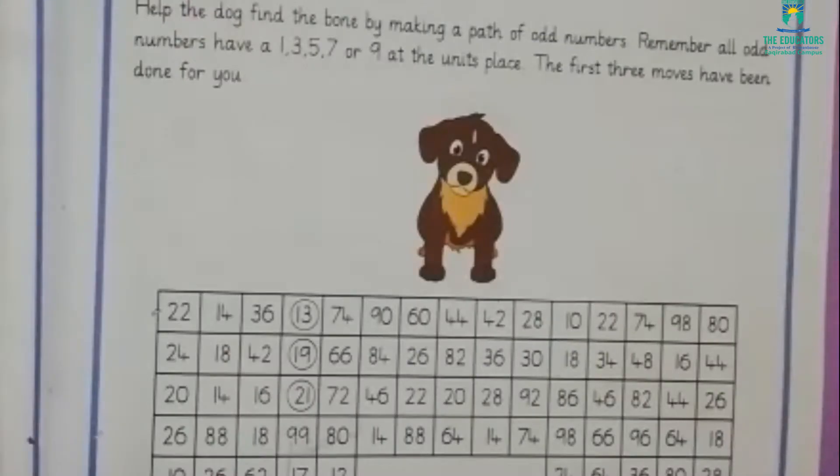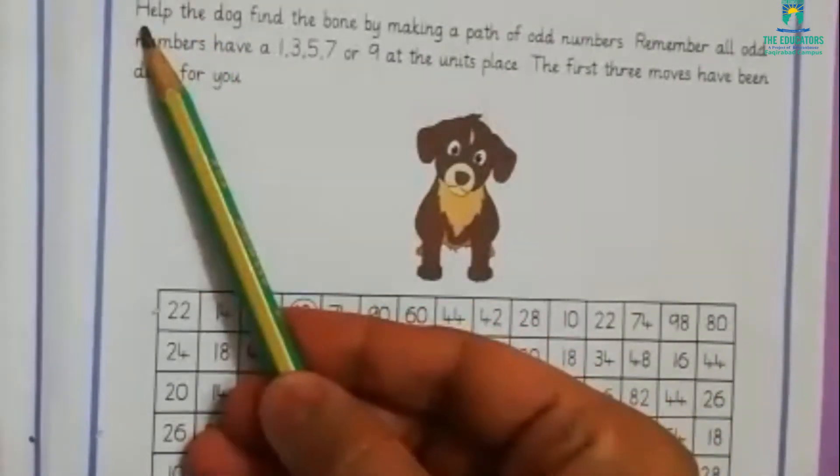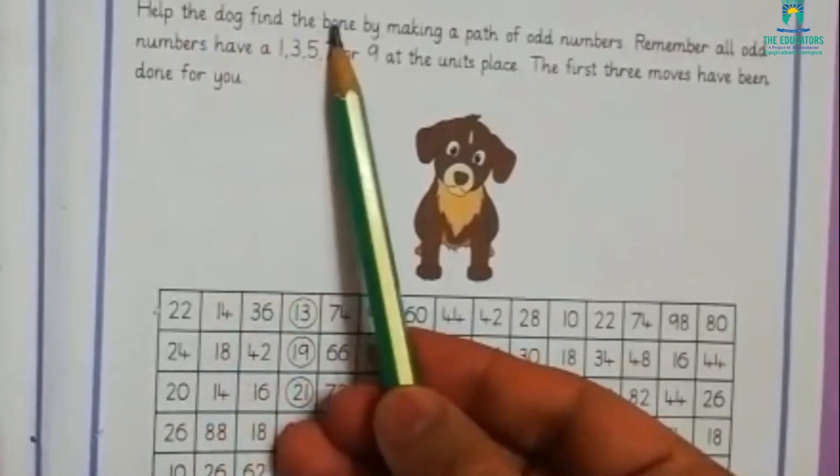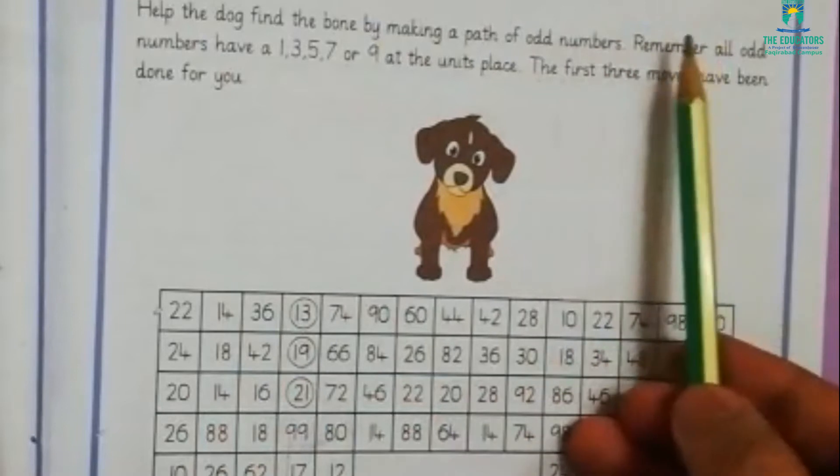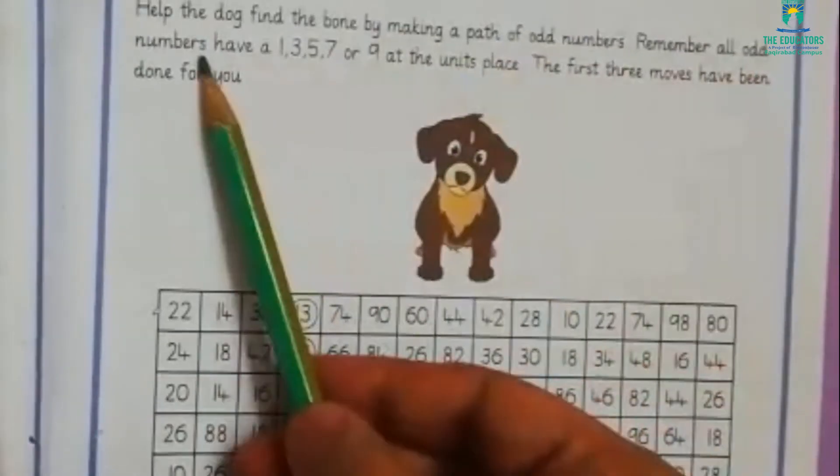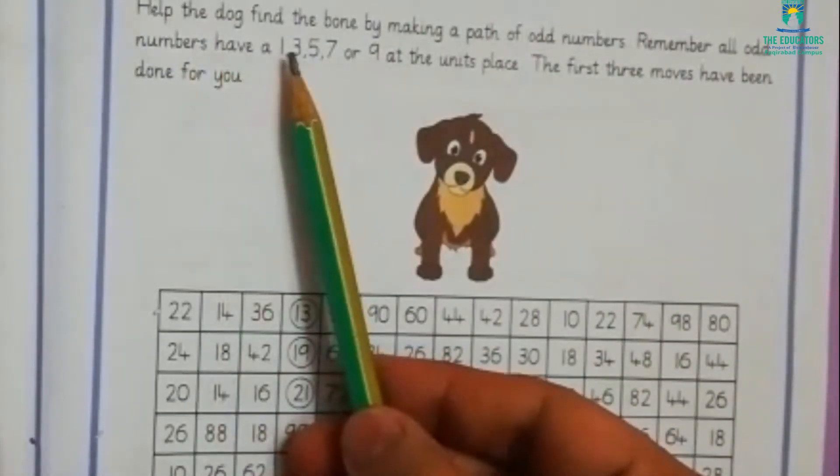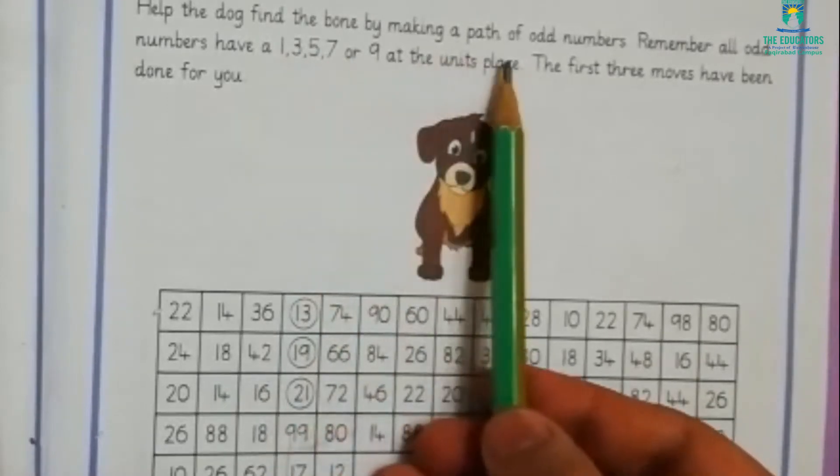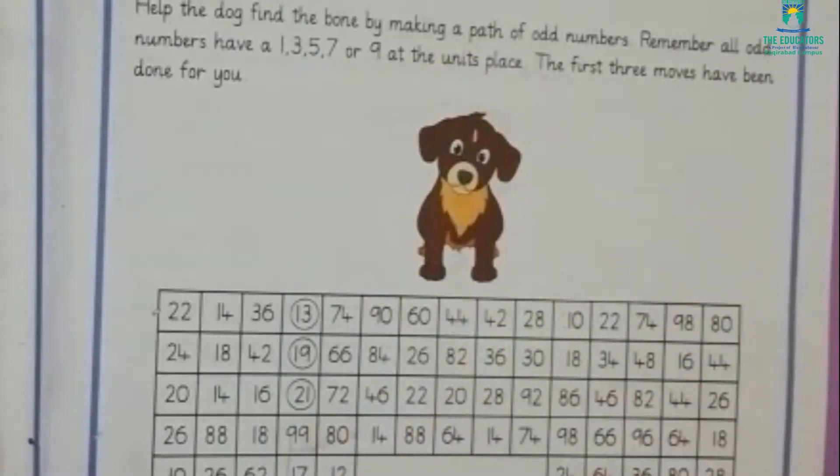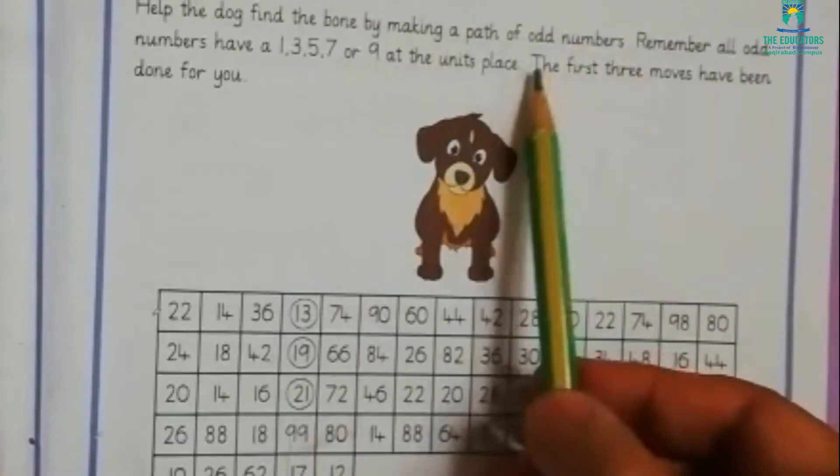Help the dog find the bone by making a path of odd numbers. Remember, our odd numbers have a 1, 3, 5, 7, or 9 at the units place. Where? At the units place. The first three moves have been done for you.